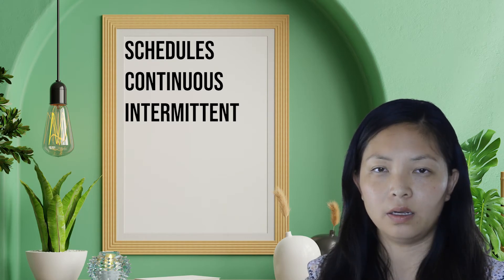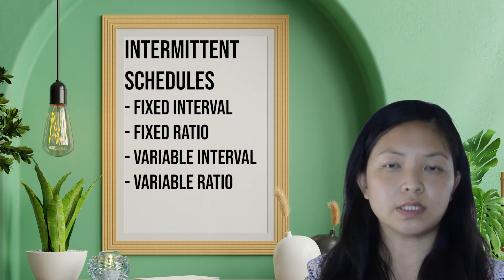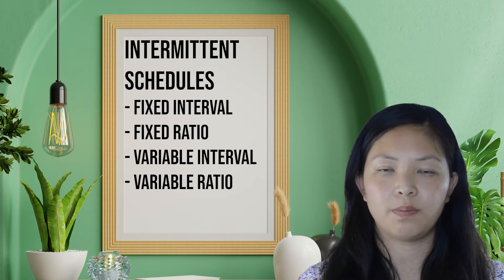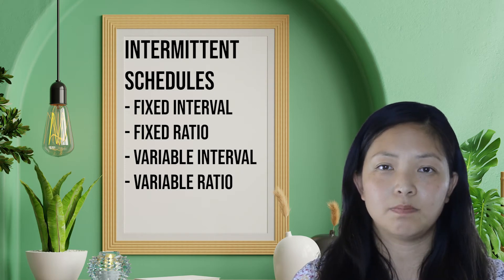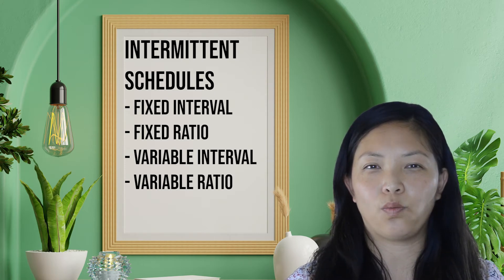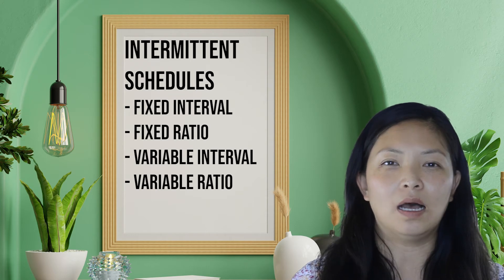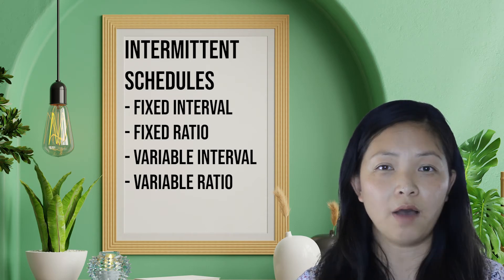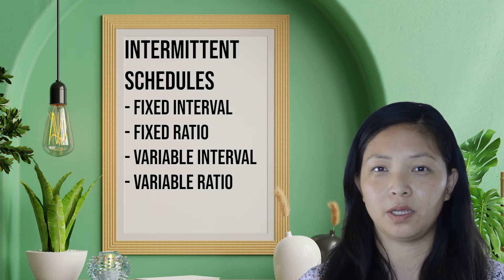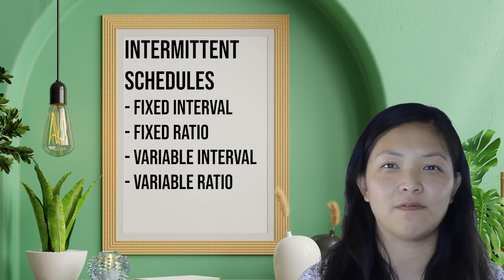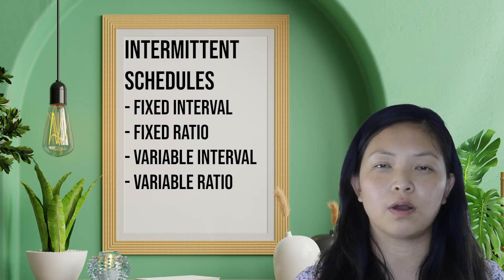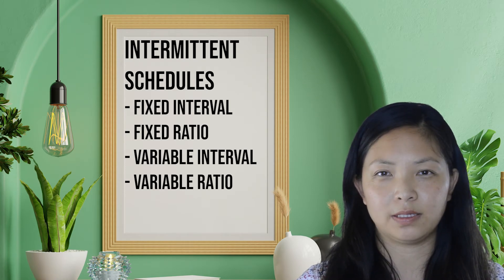Following up are different intermittent schedules at the workplace. Fixed interval schedules provide stimulus at a fixed set of time. For instance, many Chinese companies provide one month's extra pay before the Chinese New Year every year. Or at a coffee shop, employers typically provide free coffee beans every paycheck, every two weeks. These are great tools for attracting employees. However, it doesn't work very well in shaping new behaviors.